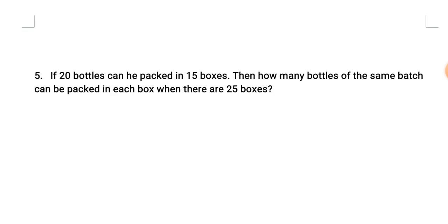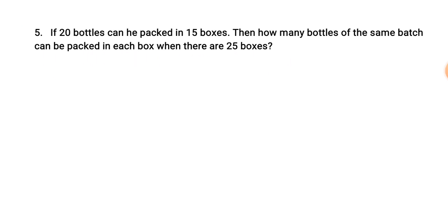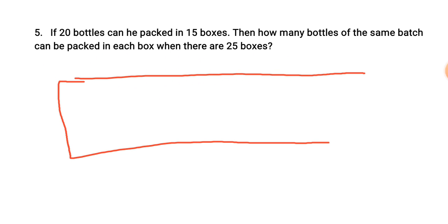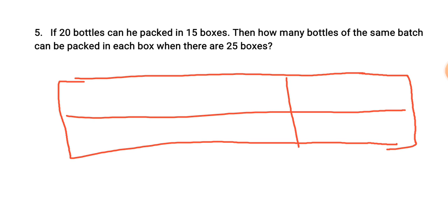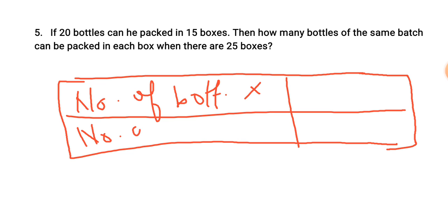Next, question number 5: 20 bottles can be packed in 15 boxes. How many bottles of the same size can be packed in each box when there are 25 boxes? When the number of boxes increases, this will also be a case of inverse variation. Number of bottles is x, number of boxes is y. We have x as 20 bottles and y as 15 boxes.